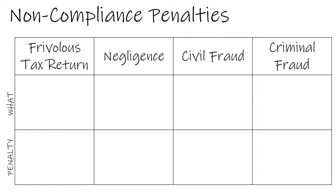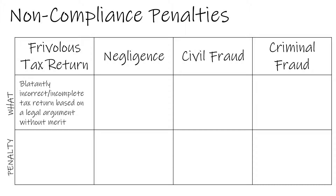If, through the course of an IRS audit, the IRS detects error or fraud, the IRS can impose additional penalties on the taxpayer. These penalties range in severity based on the severity of the offense. The lowest severity is a frivolous tax return, which is a blatantly incorrect or incomplete tax return based on a legal argument without merit.